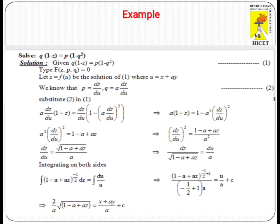For example, Q(1 - Z) = P(1 - Q²). In this given problem, the variables involved are P, Q, and Z. P and Q are first-order derivatives and Z is also present as a multiplier. So this is a Type 2 problem. In this case, we consider Z as a function F(U), where U equals X + AY.